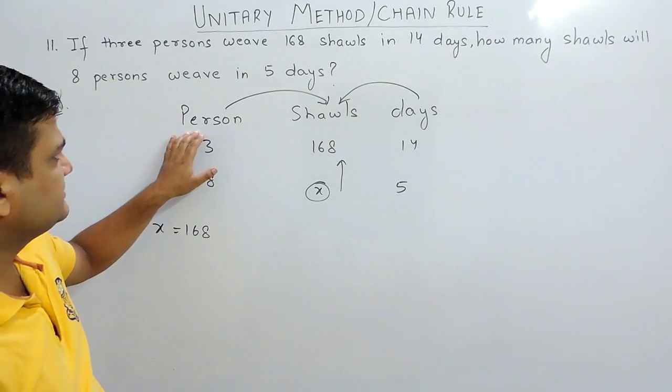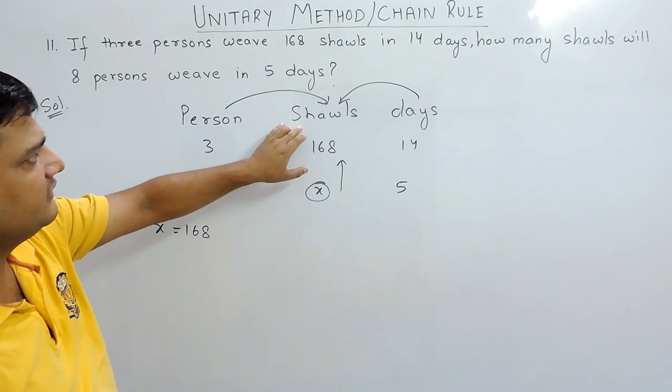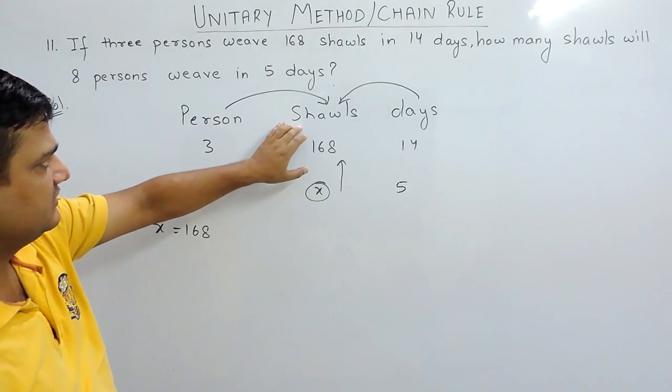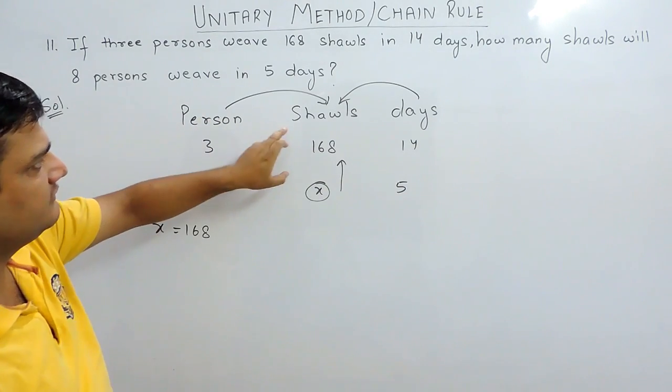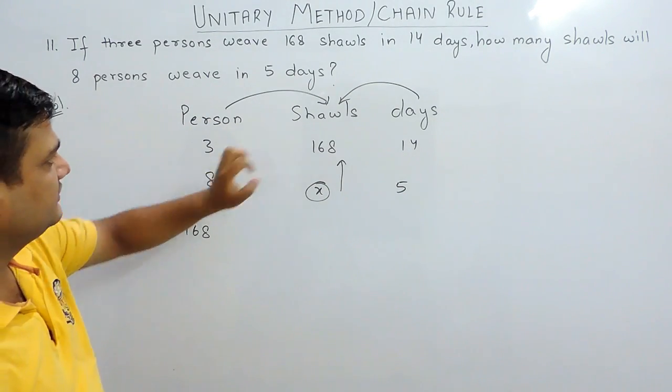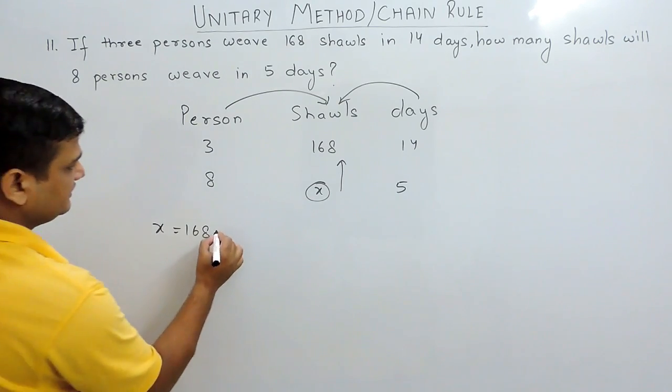If the number of persons are more, then they will weave more shawls. And if the number of persons are less, then they will weave less shawls. Therefore, the relation is direct.